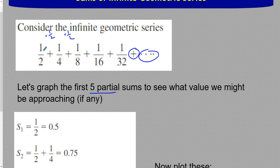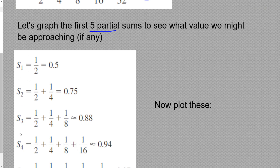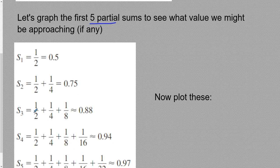If we were to find the first five partial sums, meaning sum number one is the first term, sum number two is the first and second term, sum number three is the first, second, and third term, etc.